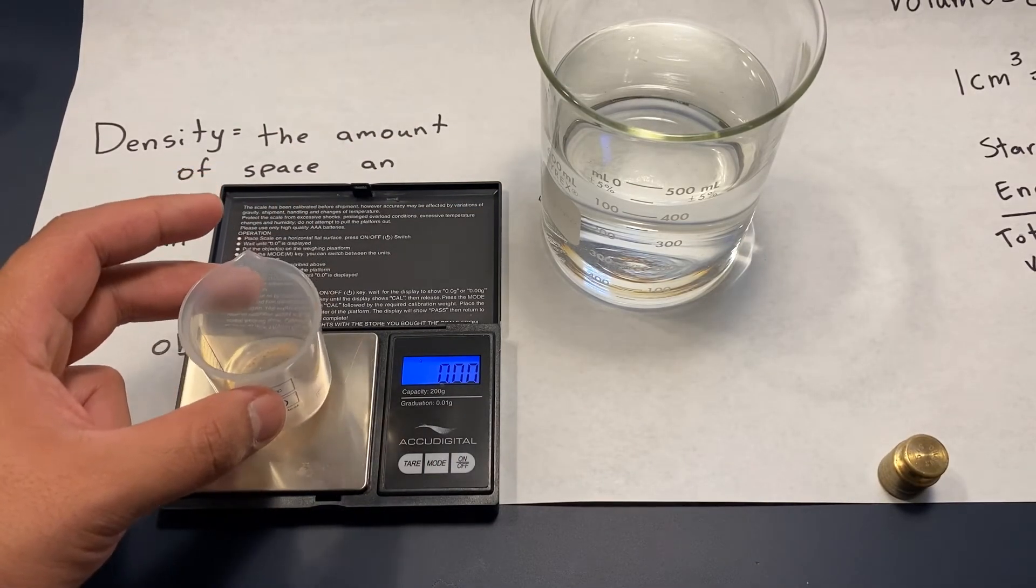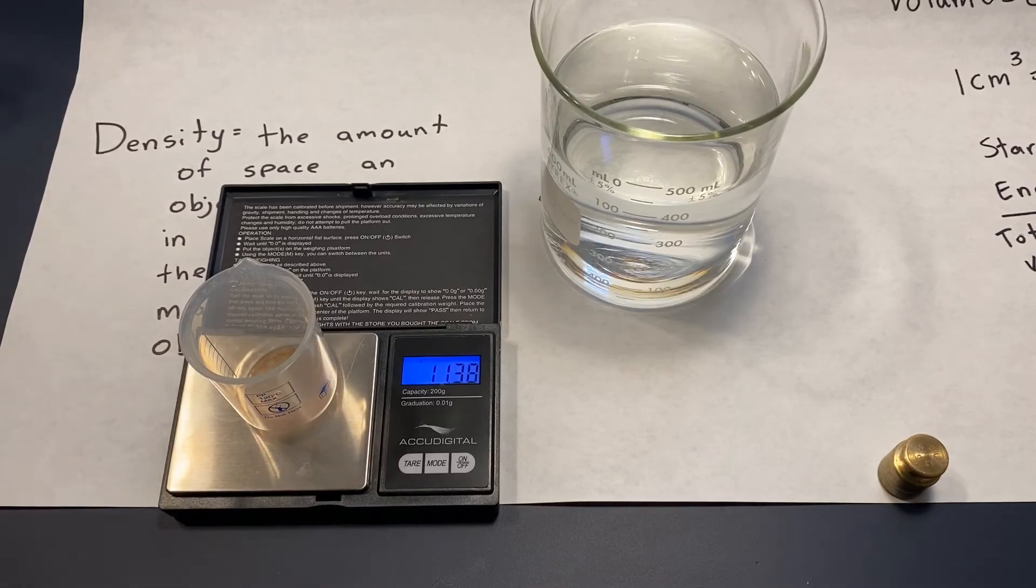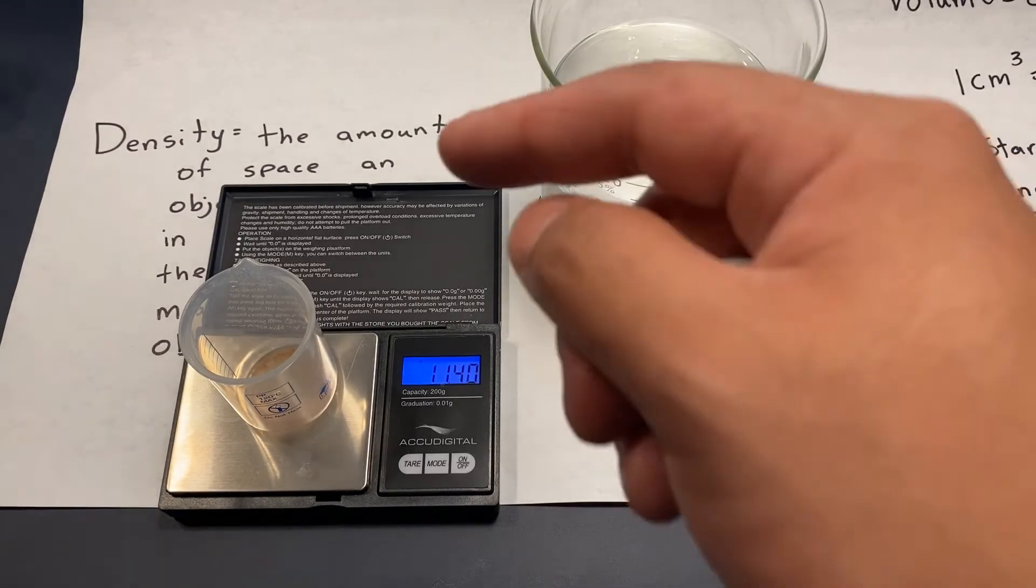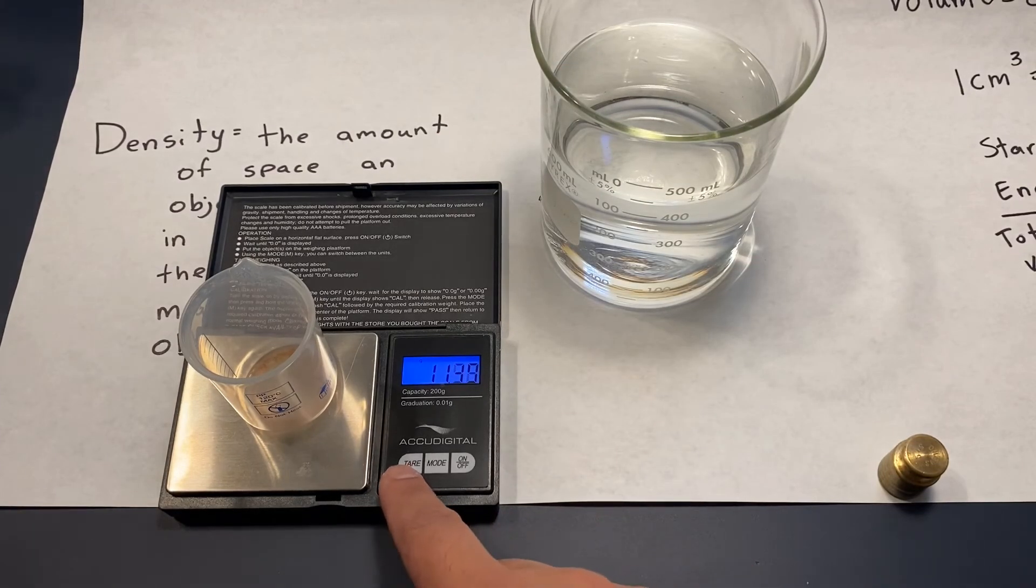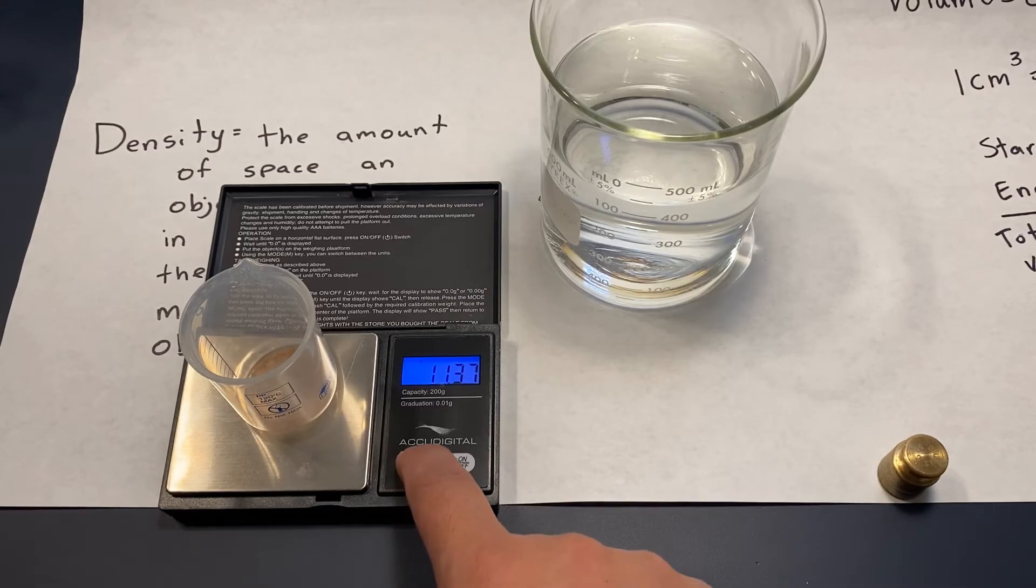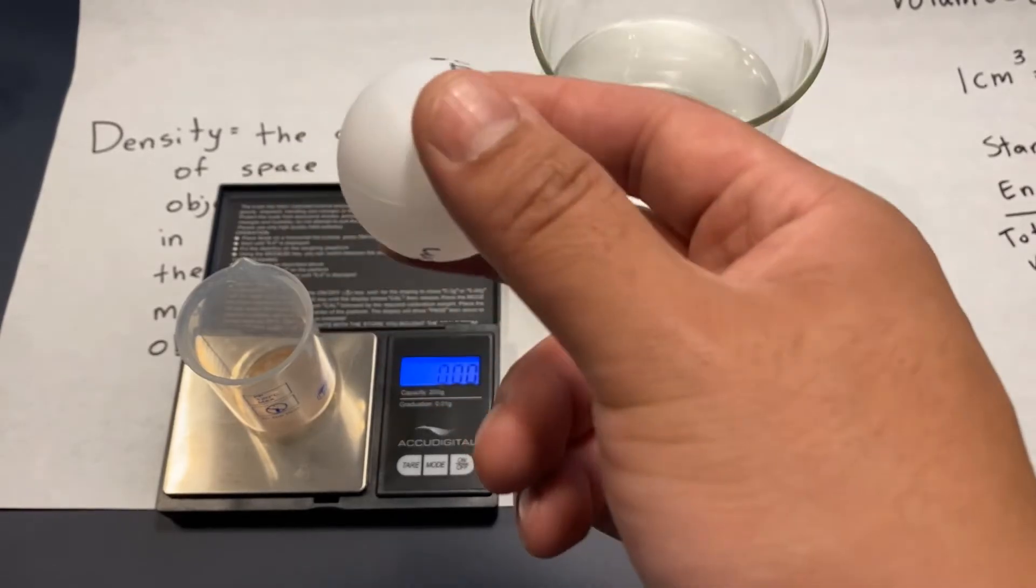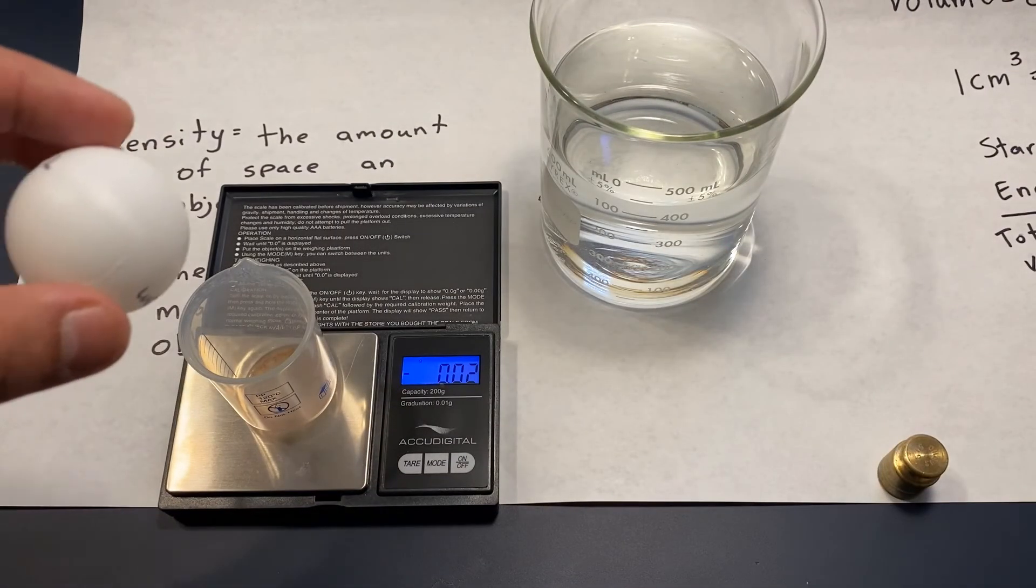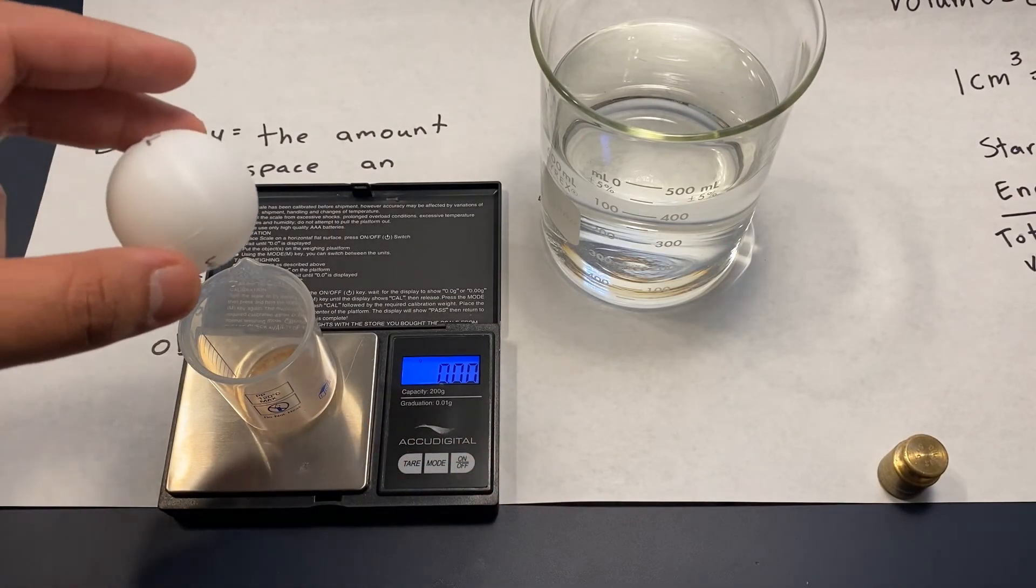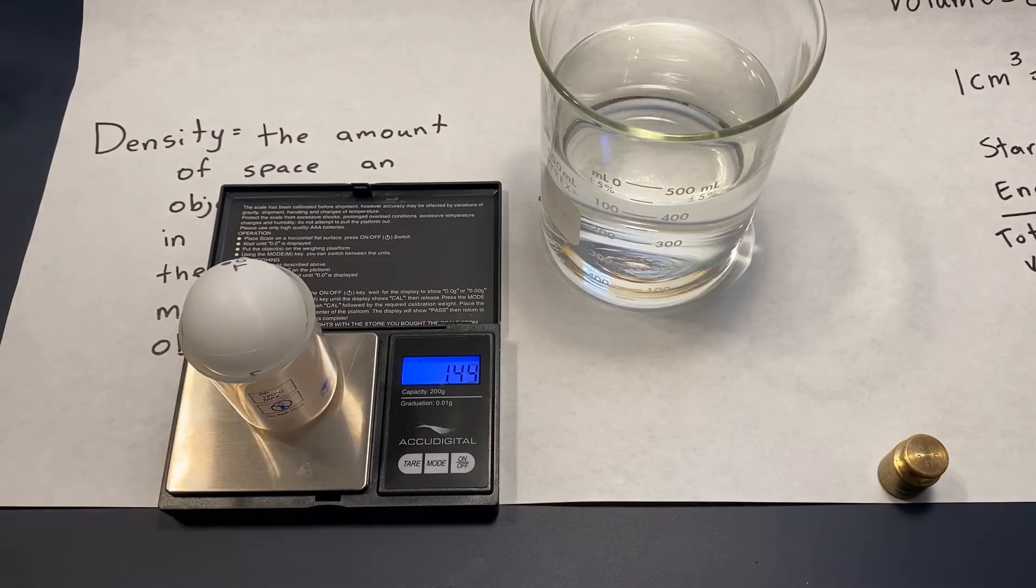And since I'm having a hard time placing the ping pong ball on the scale, I'm going to use a beaker to hold it in. Now the magical part about this digital scale is that I can put any item and then press the word tare, and it's going to change it to zero. Now I'm going to add the ping pong ball on top. And it's about 1.44 grams.